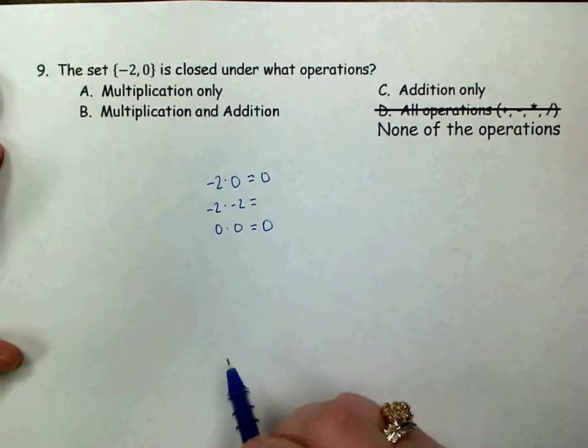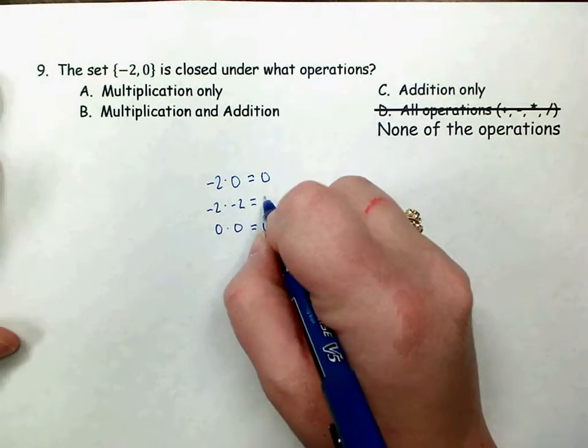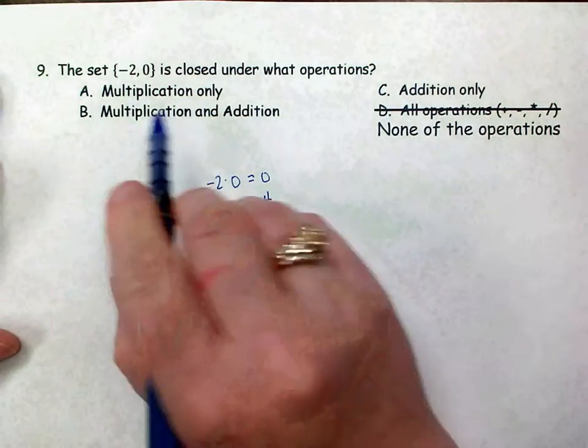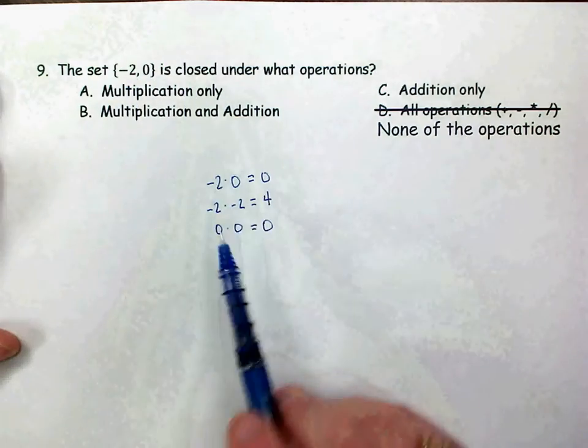Those are part of the set. But the problem is right here, negative 2 times negative 2 is positive 4. That number is not in that set. So this set of numbers is not closed for multiplication.